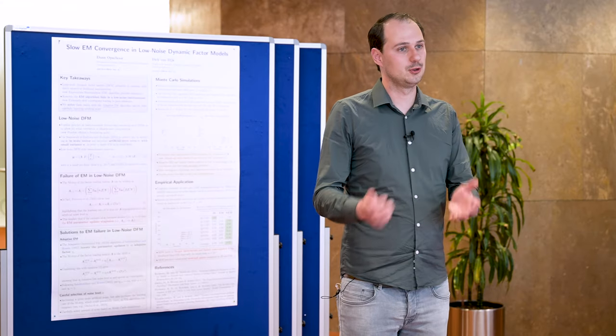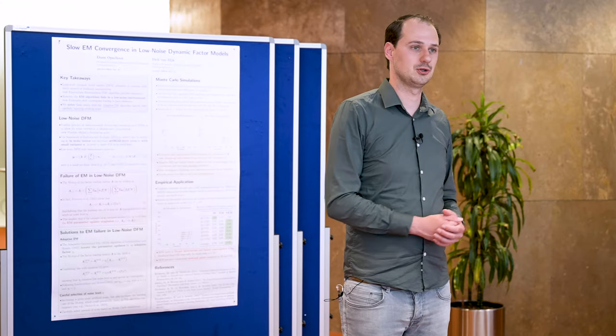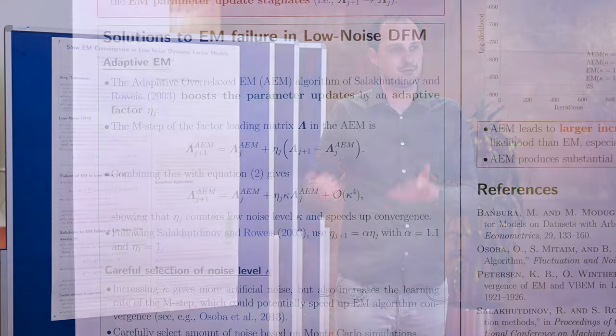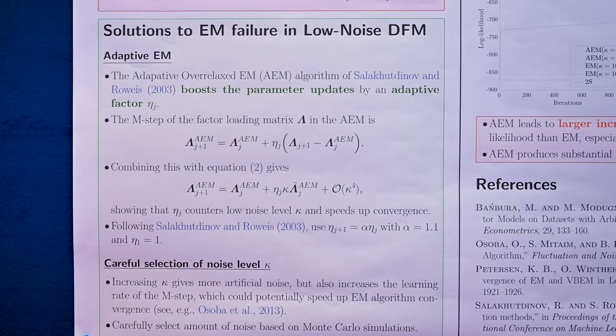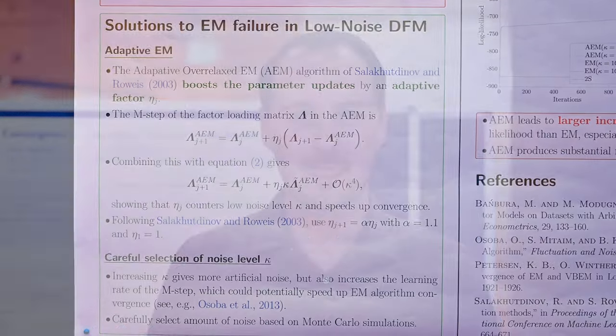To solve this issue, we propose to either use an adaptive version of the expectation maximization algorithm or to artificially increase the noise level. We show in our empirical exercise that we can substantially improve the now-casting performance of euro area GDP growth, and therefore we suggest to use this method more commonly in macroeconomic forecasting.